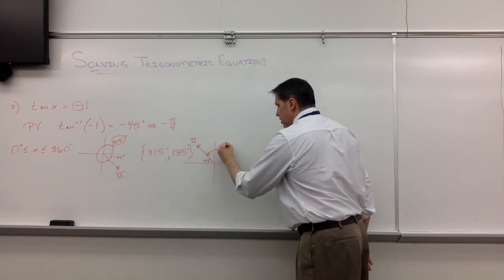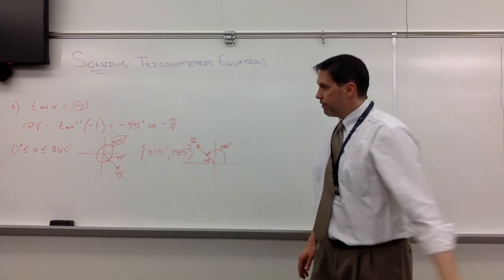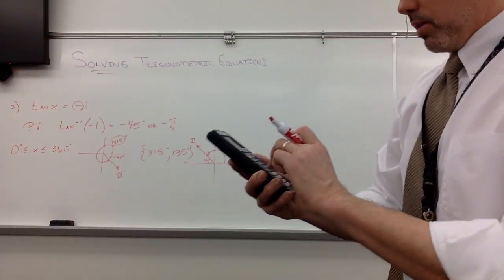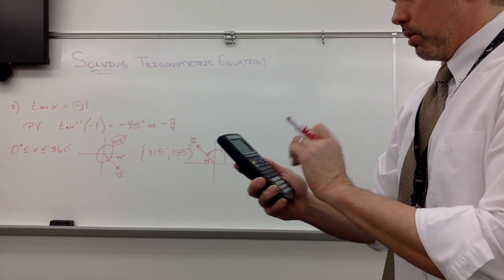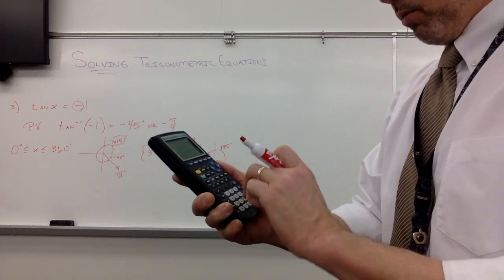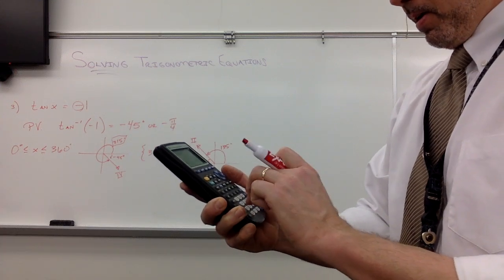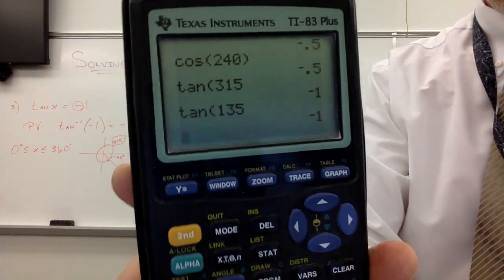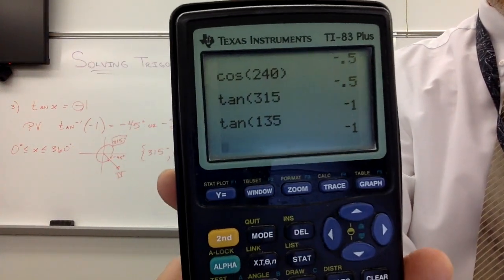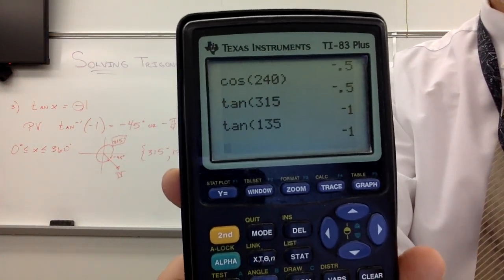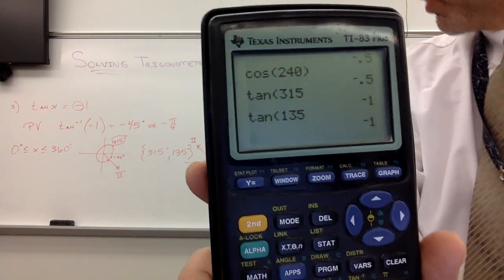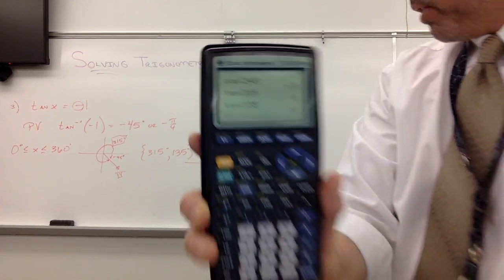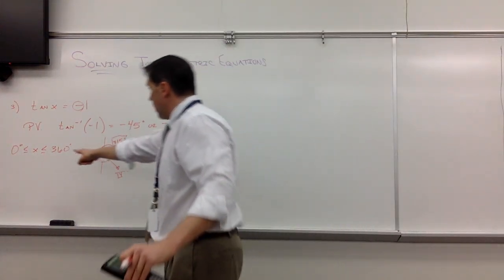Until you get very familiar with this, I would suggest just punch it in the calculator. It takes but seconds. If I did the tangent of 315 and the tangent of 135, notice tangent of 315: negative 1. Tangent of 135: negative 1. Those are the two solutions that solved this, and those are the only two between 0 and 360.